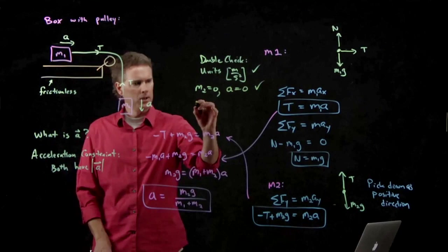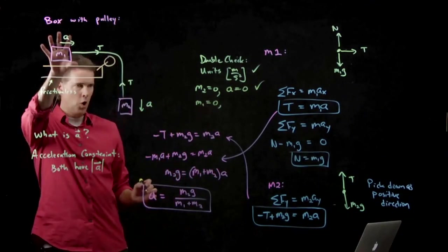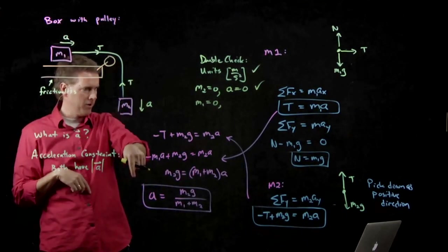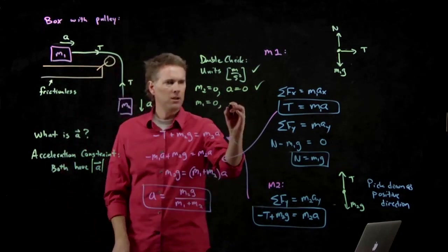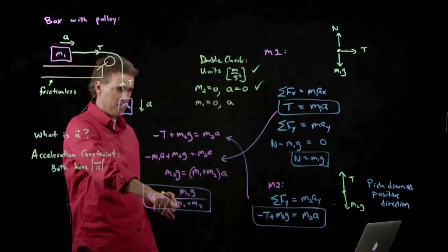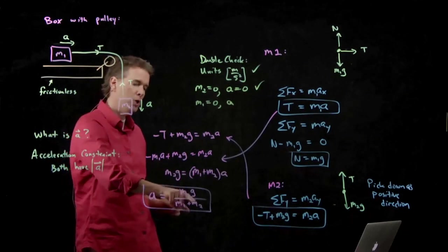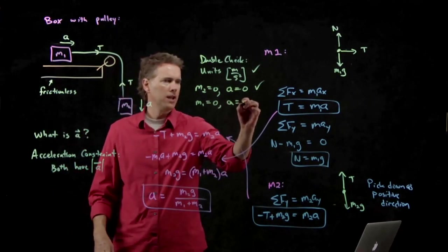If M1 equals zero, there's no mass up here. How fast should this block fall towards the ground? Gravity, right? G. Is that what we get? M1 goes away. I got M2 over M2, which is one. Multiply that by G, and I get gravity.